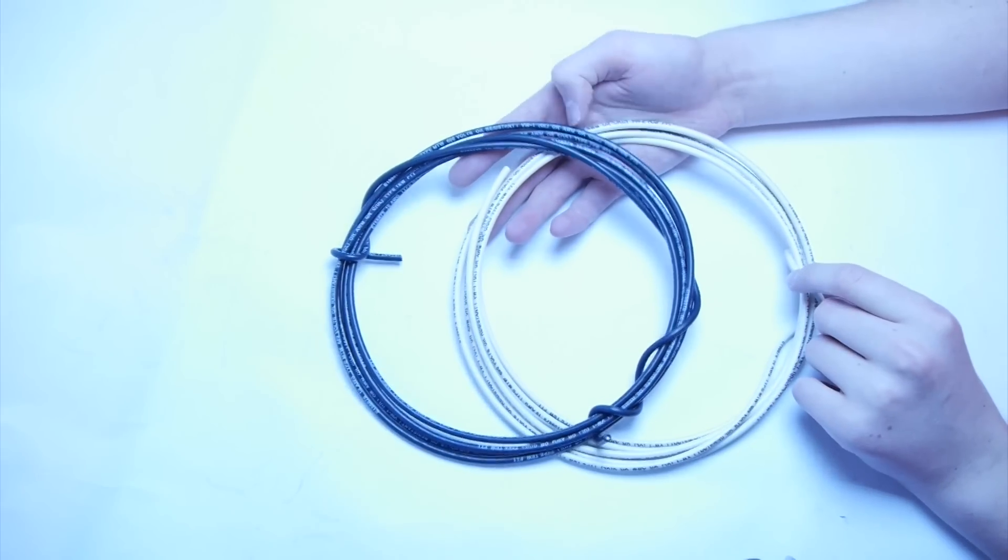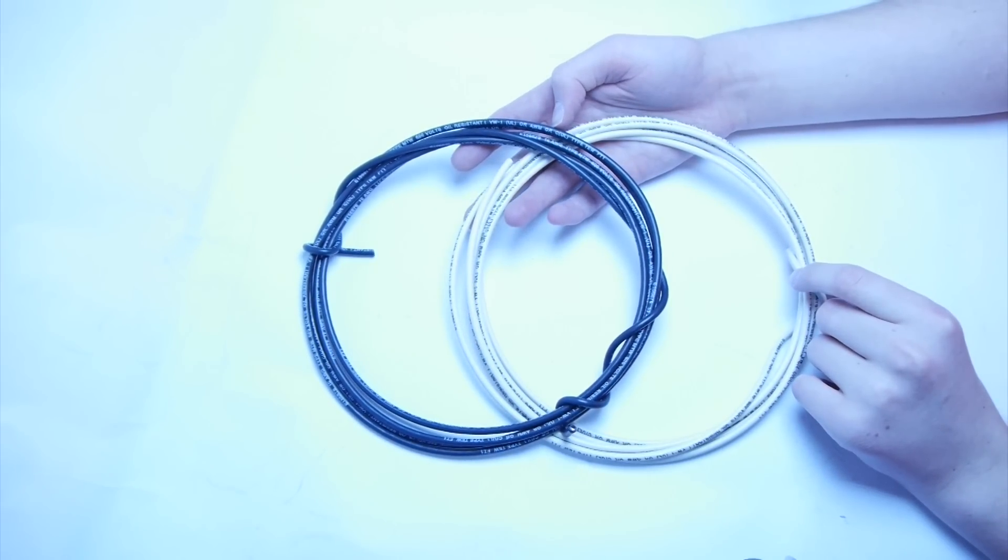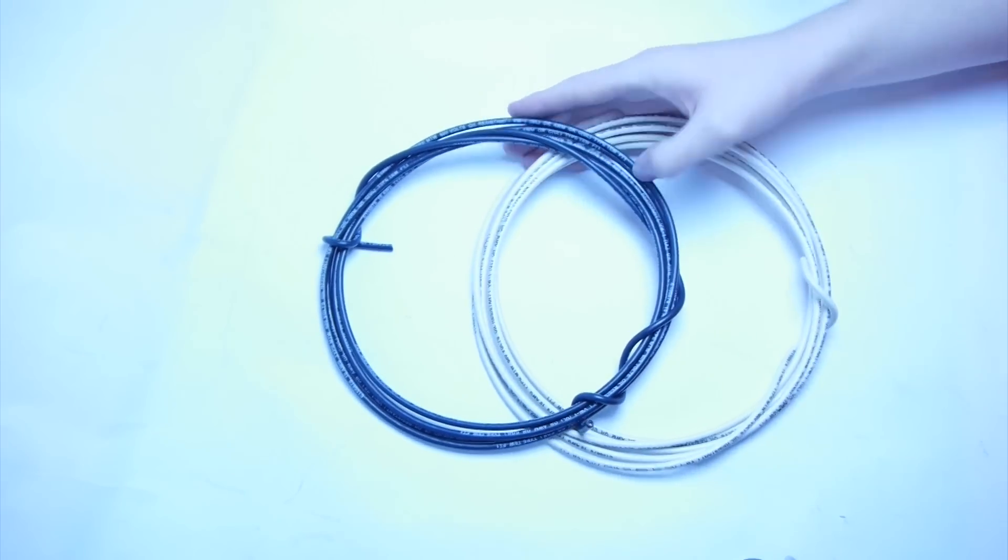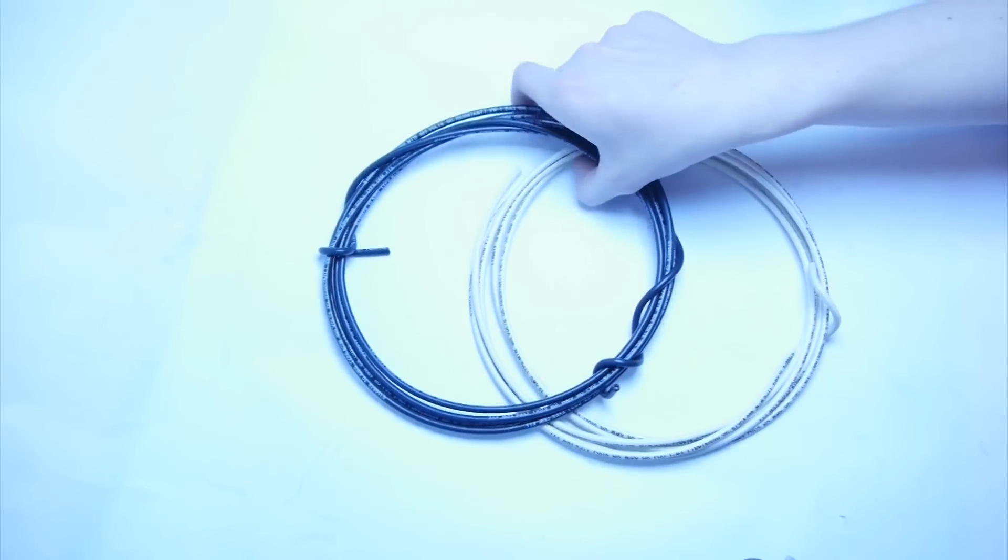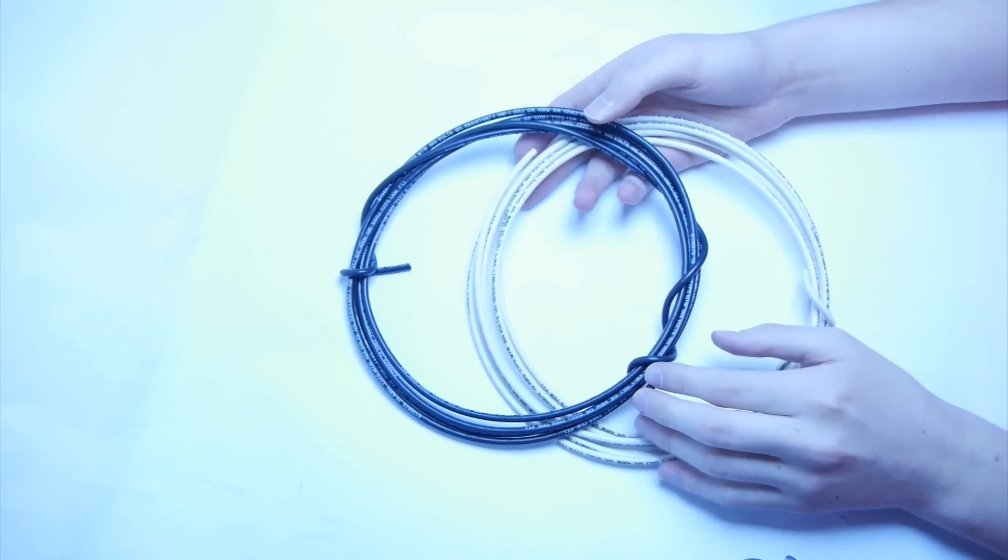In FRC, we use many different sizes of wire. The size of wire is measured in AWG, or American Wire Gauge. The smaller the number, the larger the wire. For our 30 to 40-amp circuits, these connectors on your power distribution board, you use a minimum size of 12 AWG.